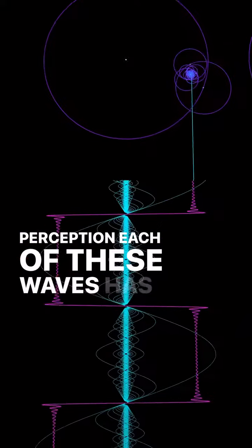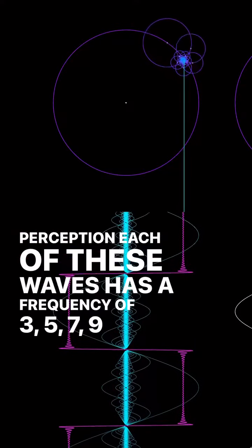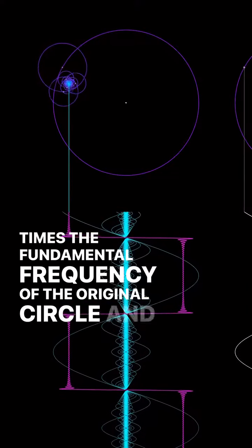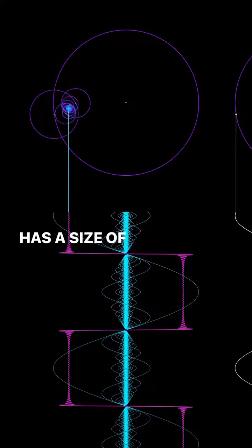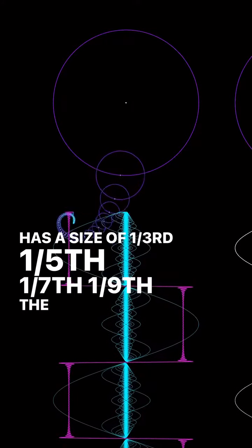Each of these waves has a frequency of three, five, seven, nine times the fundamental frequency of the original circle. And has a size of one-third, one-fifth, one-seventh, one-ninth the original circle.